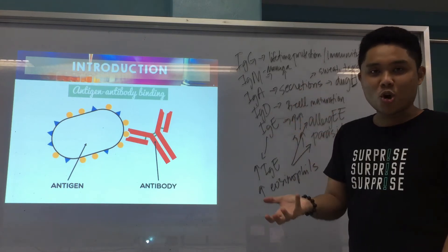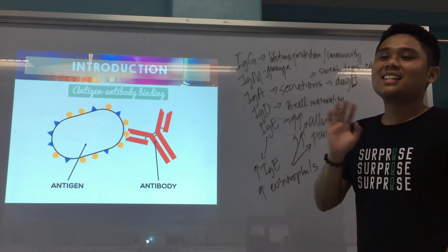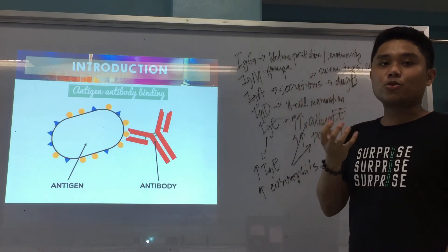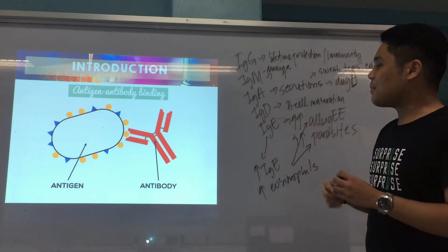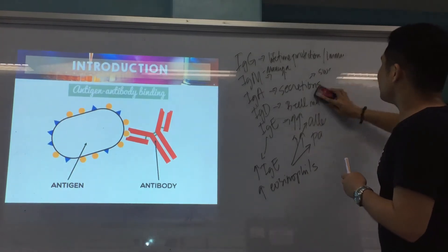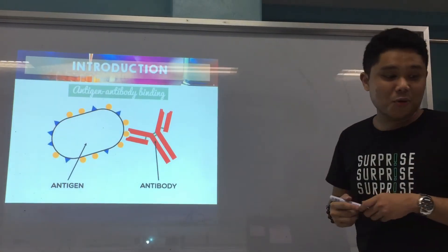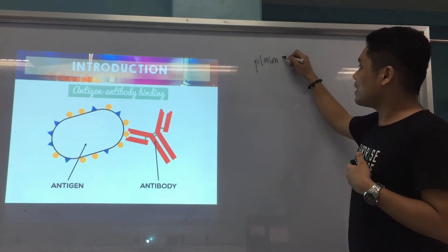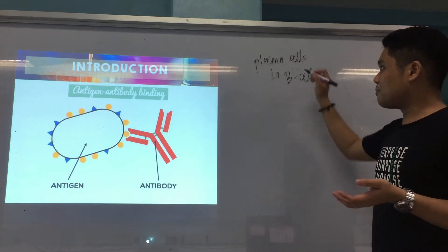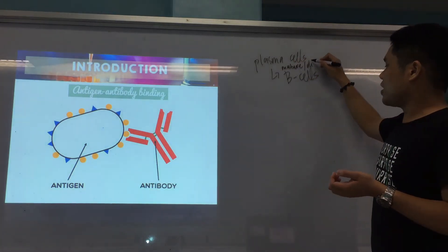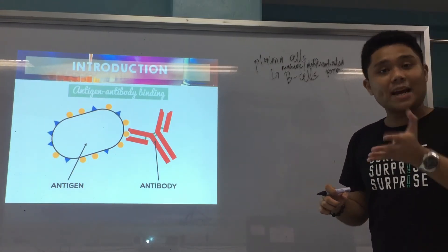Those are basically a rough description of your antibodies — the different types. In third year in immunology and serology, you will devote a whole semester for the discussion of the different antigens and antibodies, their reactions, and immunoassays. All of your antibodies are produced by your plasma cells. Plasma cells are a form of B cells — your B cells are really the ones that produce your antibodies, in the form of plasma cells, which are the mature differentiated form of B cells.